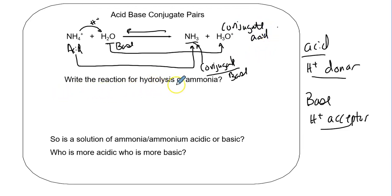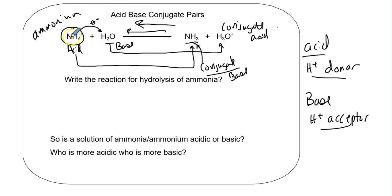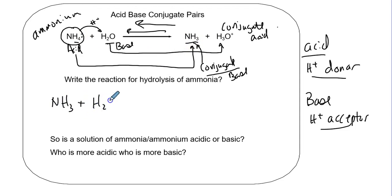Write the reaction for hydrolysis of ammonia. This is ammonium. What would be the reaction going this way? Whoever has the H+ is the acid; whoever doesn't have it is the base. This guy has an extra H+, so this is the acid. Once it loses it, it becomes the base and can accept one. The ammonia can grab onto a base - it's going to get that from water - and produce NH4+ plus OH-.